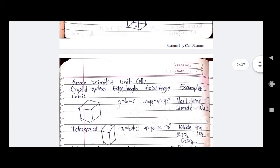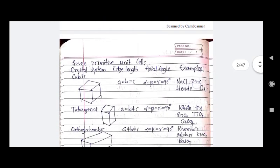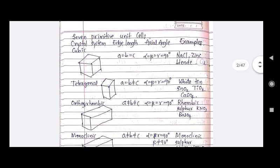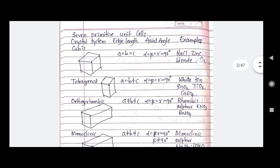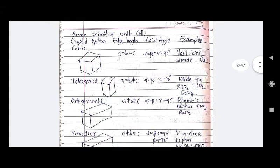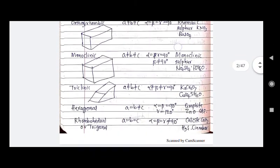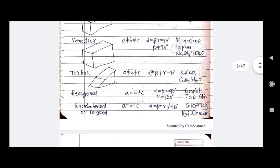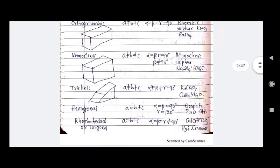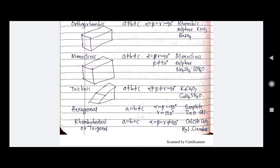We have seven primitive unit cells: cubic, tetragonal, orthorhombic, monoclinic, triclinic, hexagonal, and rhombohedral (or trigonal).